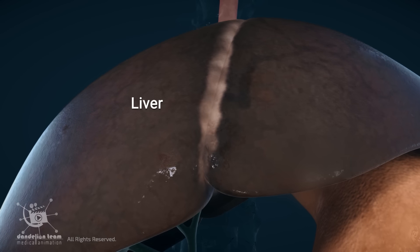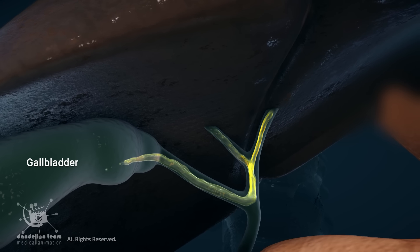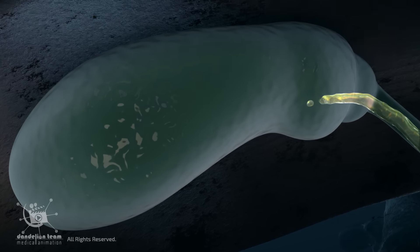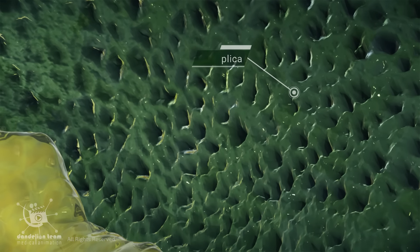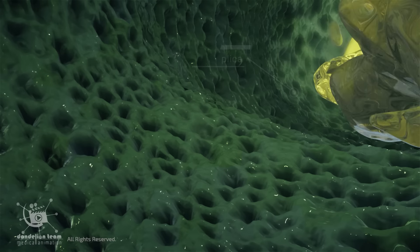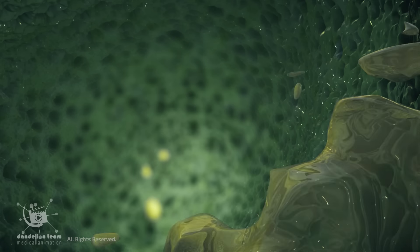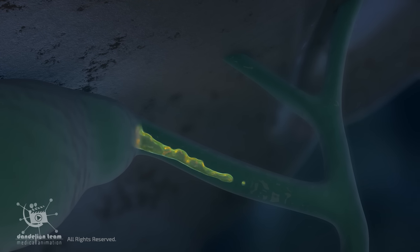The liver produces bile and stores it in the gallbladder. While the term rugae is not as commonly used to describe the mucosal folds of the gallbladder, the luminal walls of the gallbladder do have folds. In this context, the term plica is more commonly used. The luminal surface of the gallbladder is highly folded and has a honeycomb appearance. These folds allow the gallbladder to expand to store and contract to release bile in response to dietary fat intake. The plica also play a role in mixing bile, preventing the settling of bile components and ensuring that the released bile is a uniform mixture.